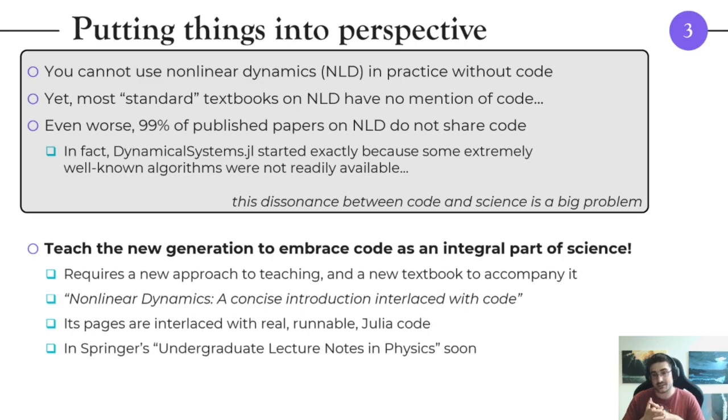We were thinking for a long time how can we solve this or change this, and after a lot of effort we concluded that the best way to change this is to teach the new generation to embrace code as an integral part of science and learning. This new textbook is called Nonlinear Dynamics: A Concise Introduction Interlaced with Code. It is written by myself and Ulrich Parlitz, my friend and co-author and mentor, and its pages are interlaced with real runnable Julia code. The textbook will be published in Springer's Undergraduate Lecture Notes in Physics soon, probably in a couple of months.